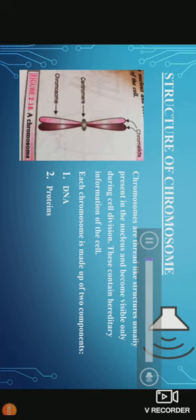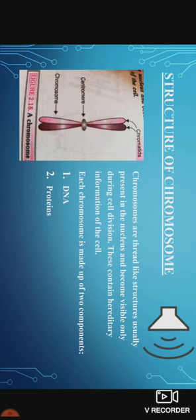Students, chromosomes are thread-like structures, usually present in the nucleus and become visible only during cell division. These contain hereditary information of the cell.